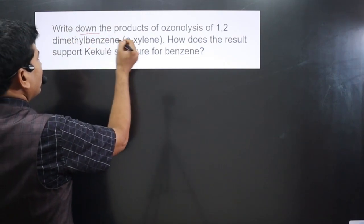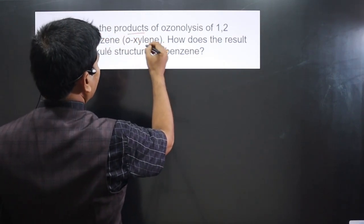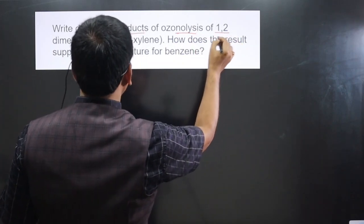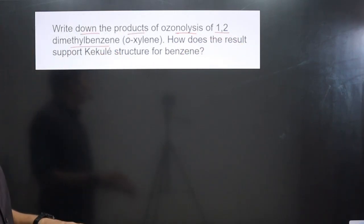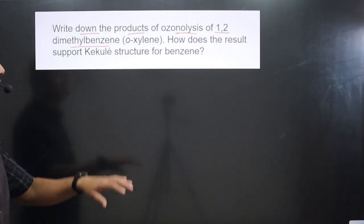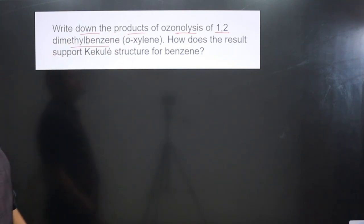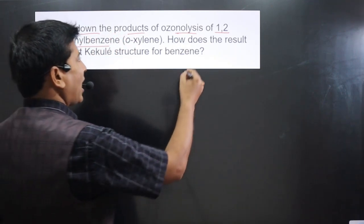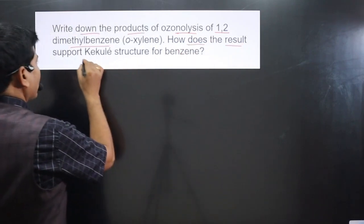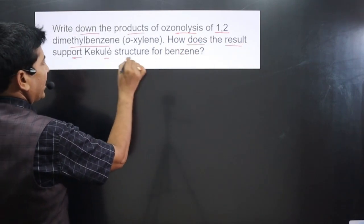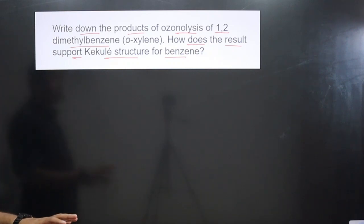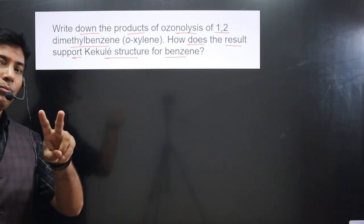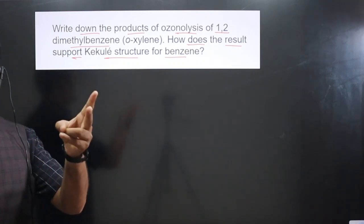The question says: write down the products of ozonolysis of 1,2-dimethylbenzene. 1,2-dimethylbenzene is also known as o-xylene. It also asks how does the result support the Kekulé structure for benzene.